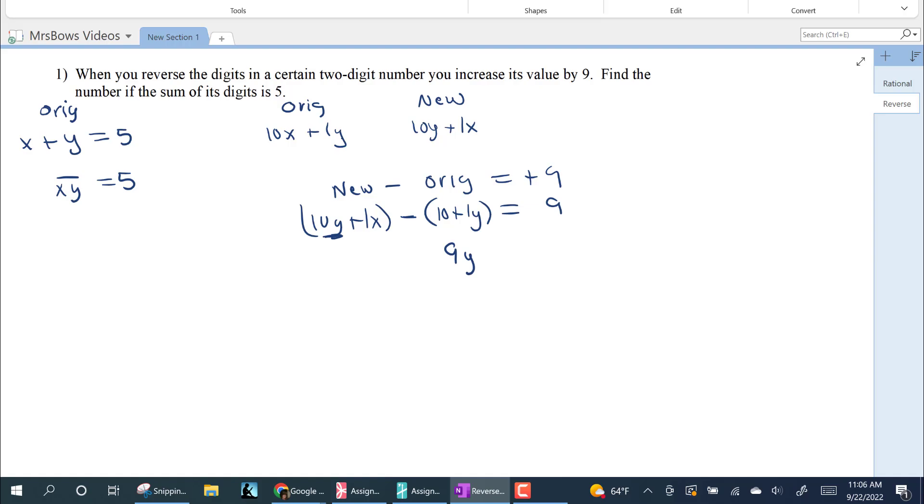And then one x subtract, oops, there's supposed to be an x right there, one x subtract ten x is negative nine x. Now we have our x and y.